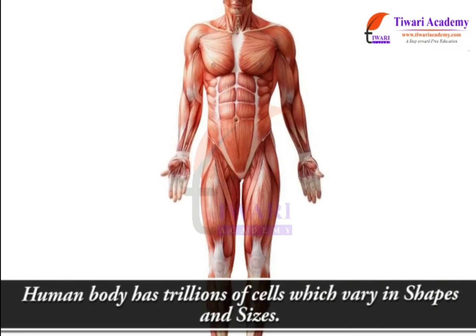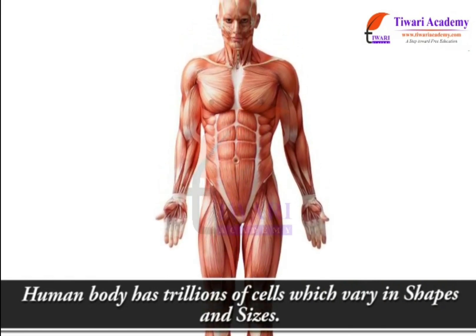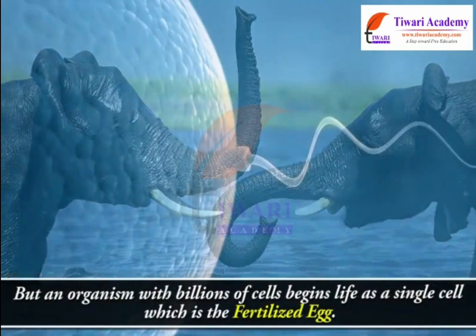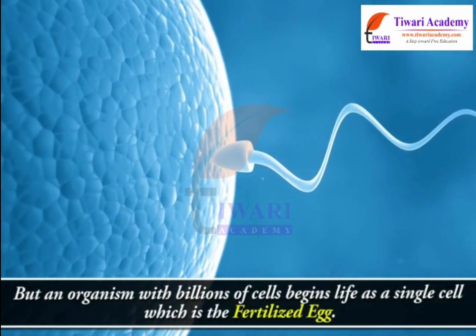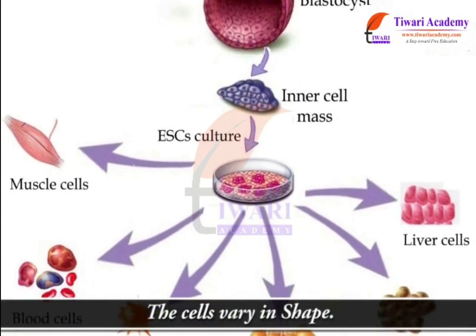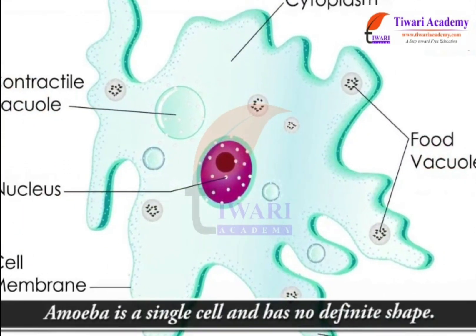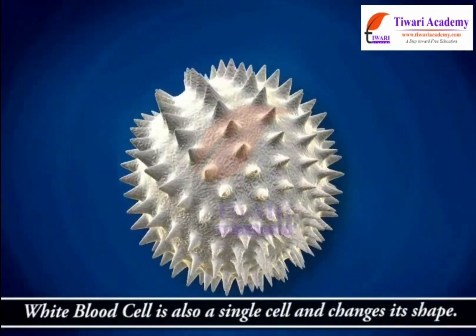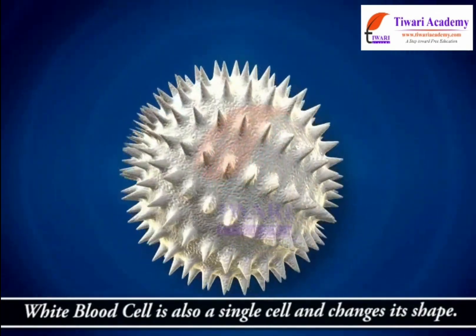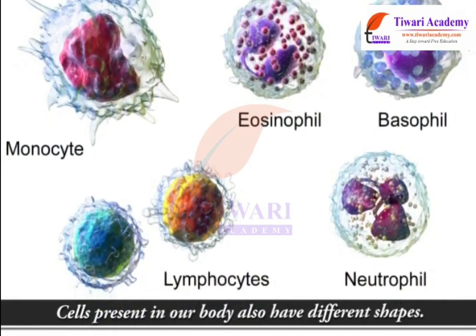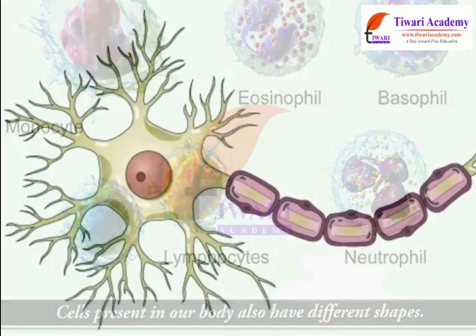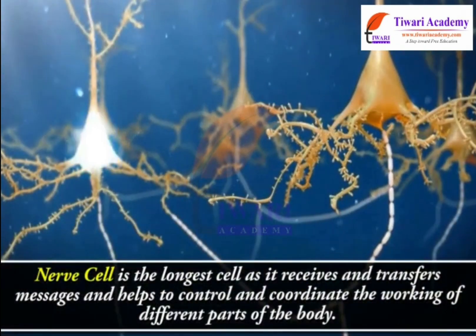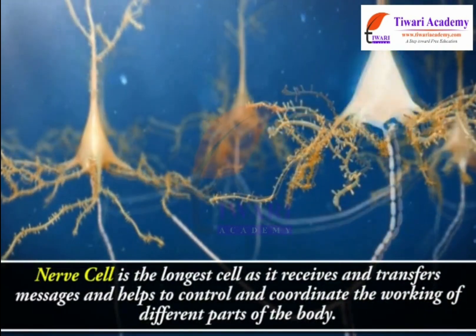The human body has trillions of cells which vary in shapes and sizes, but an organism with billions of cells begins life as a single cell, which is the fertilized egg. Amoeba is a single cell with no definite shape. White blood cells are also single cells that change shape. Nerve cells are the longest cells, as they receive and transfer messages and help control and coordinate the working of different parts of the body.